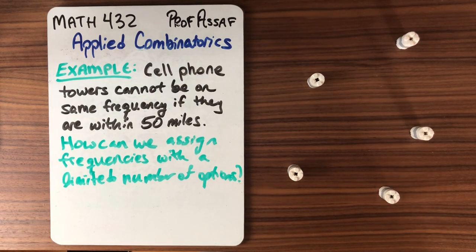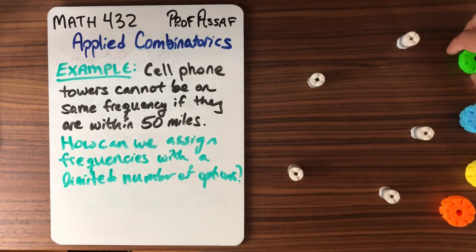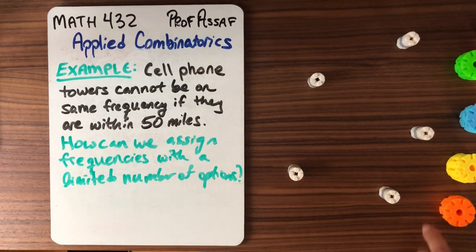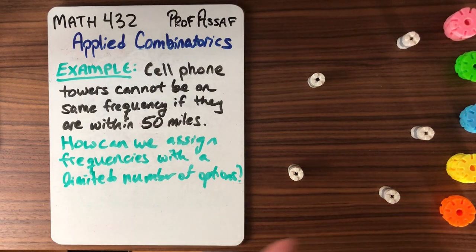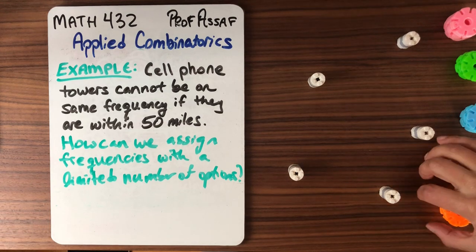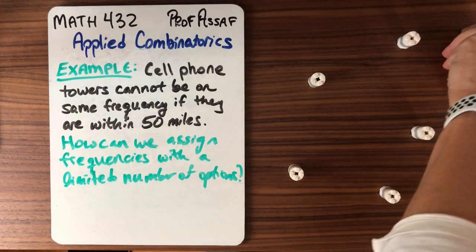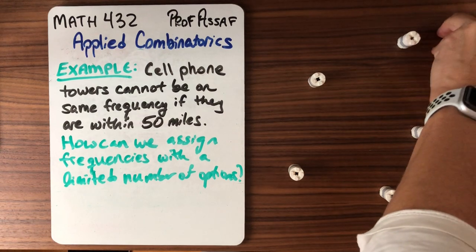Well one thing we can do is if we have infinite resources, say we have five different towers and we have five different frequencies, then we could just put a different frequency on each tower and it's no problem. But the problem is more interesting when we consider the constrained problem where we only have for example three different frequencies.